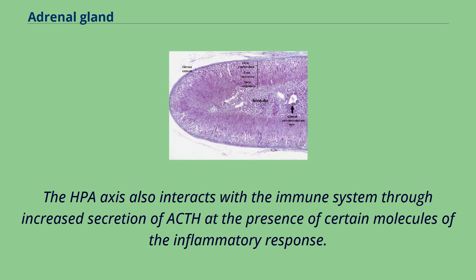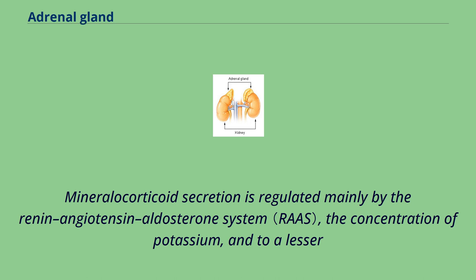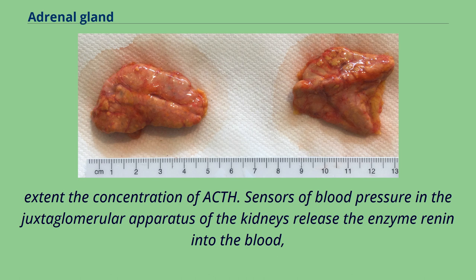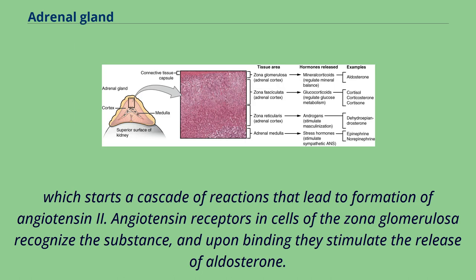The HPA axis also interacts with the immune system through increased secretion of ACTH in the presence of certain molecules of the inflammatory response. Mineralocorticoid secretion is regulated mainly by the renin-angiotensin-aldosterone system, the concentration of potassium, and to a lesser extent the concentration of ACTH. Sensors of blood pressure in the juxtaglomerular apparatus of the kidneys release the enzyme renin into the blood, which starts a cascade of reactions leading to formation of angiotensin II. Angiotensin receptors in cells of the zona glomerulosa recognize the substance and upon binding stimulate the release of aldosterone.